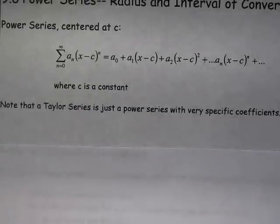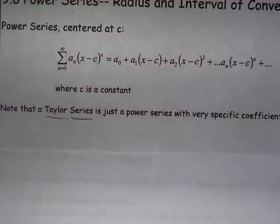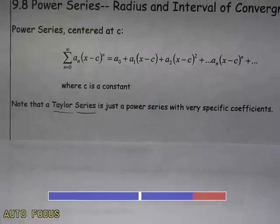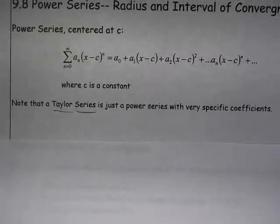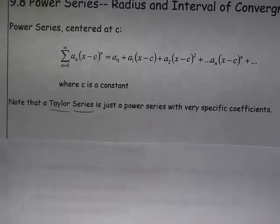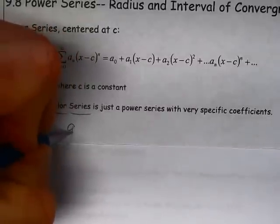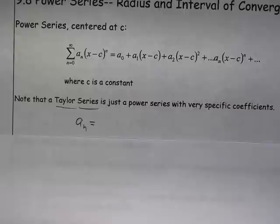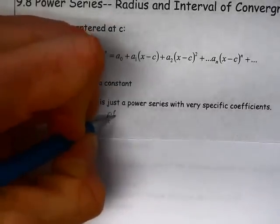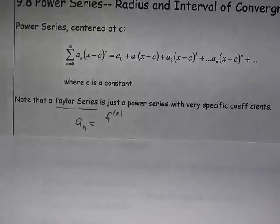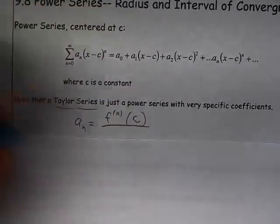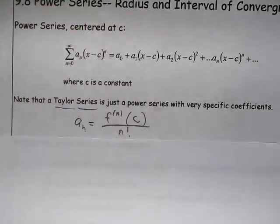A Taylor series, which we'll talk about a little bit later, a few lessons from now, is just a specific kind of power series. And if you think about the coefficients that we talked about in the Taylor polynomial, we can say that that coefficient for a Taylor series would be the nth derivative of f evaluated at this specific value, c, over n factorial.